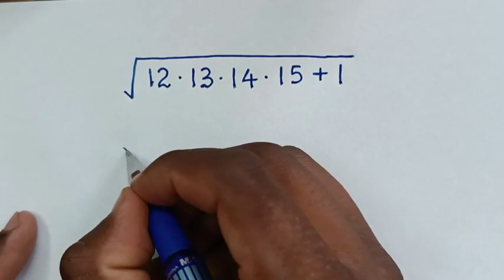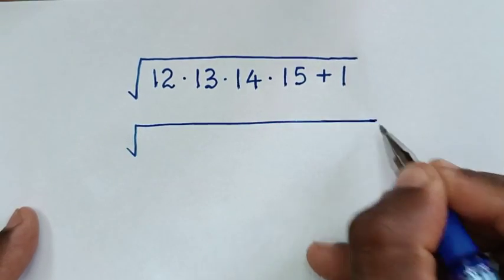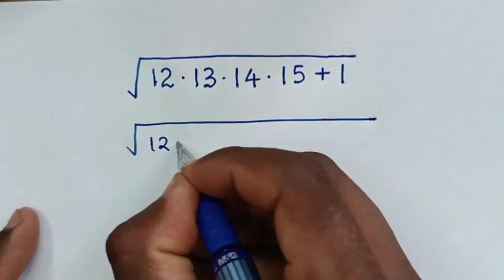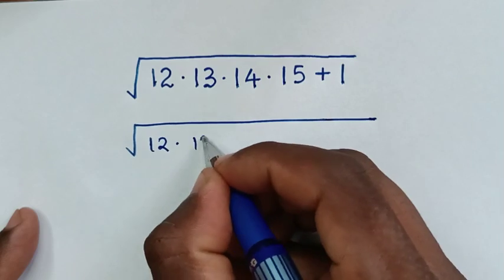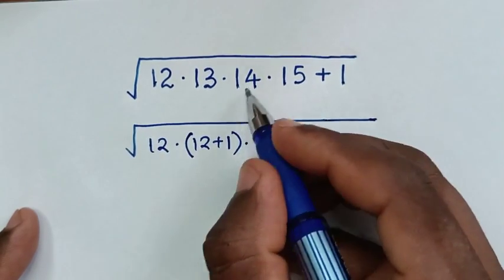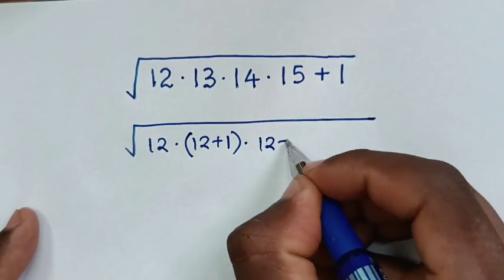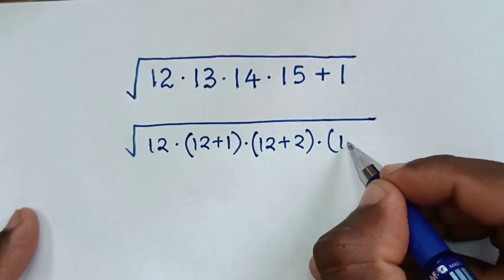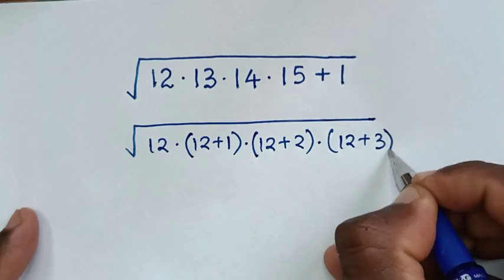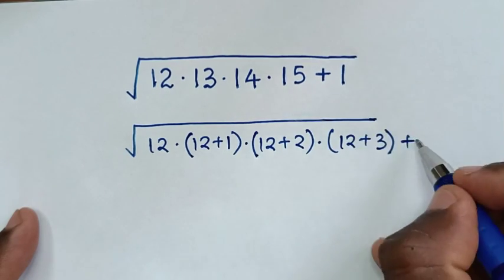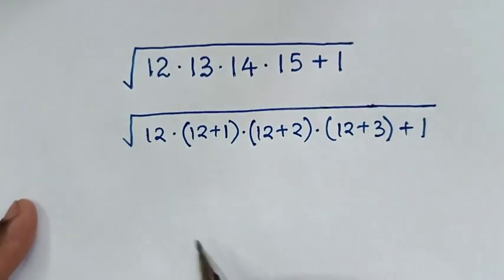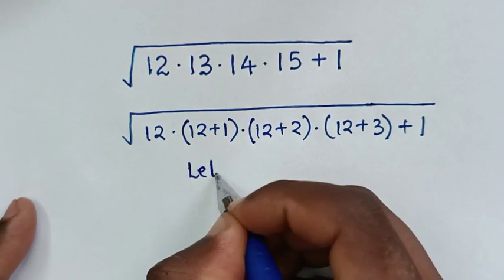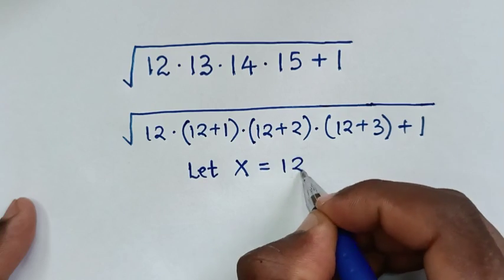So it will be the square root of 12 — we make 12 common. So it will be 12, times 13 which is the same as 12 plus 1, times 14 which is the same as 12 plus 2, times 15 which is the same as 12 plus 3, then plus 1. From here 12 is common, so we will let x equal to 12.